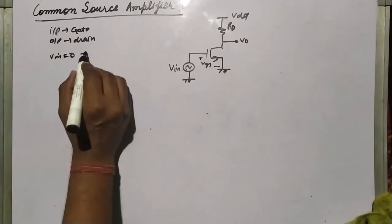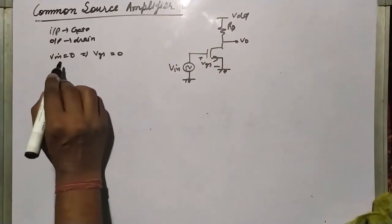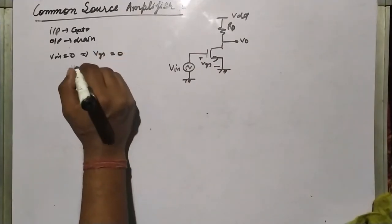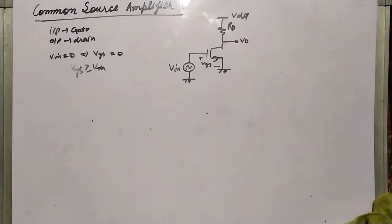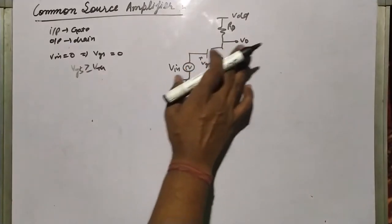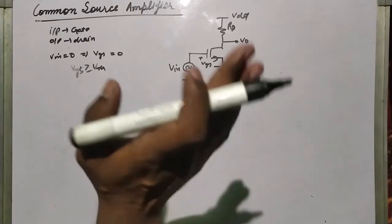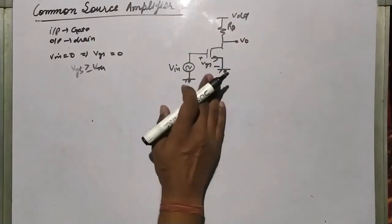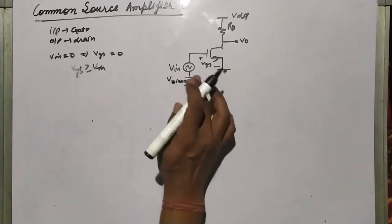If V_in equals 0, then V_GS will also be 0. Since V_GS equals 0, the MOSFET will remain off. To turn on the MOSFET, we need V_GS greater than or equal to V_TH. So we must apply a constant DC bias voltage on the gate terminal — this is the bias voltage V_bias.